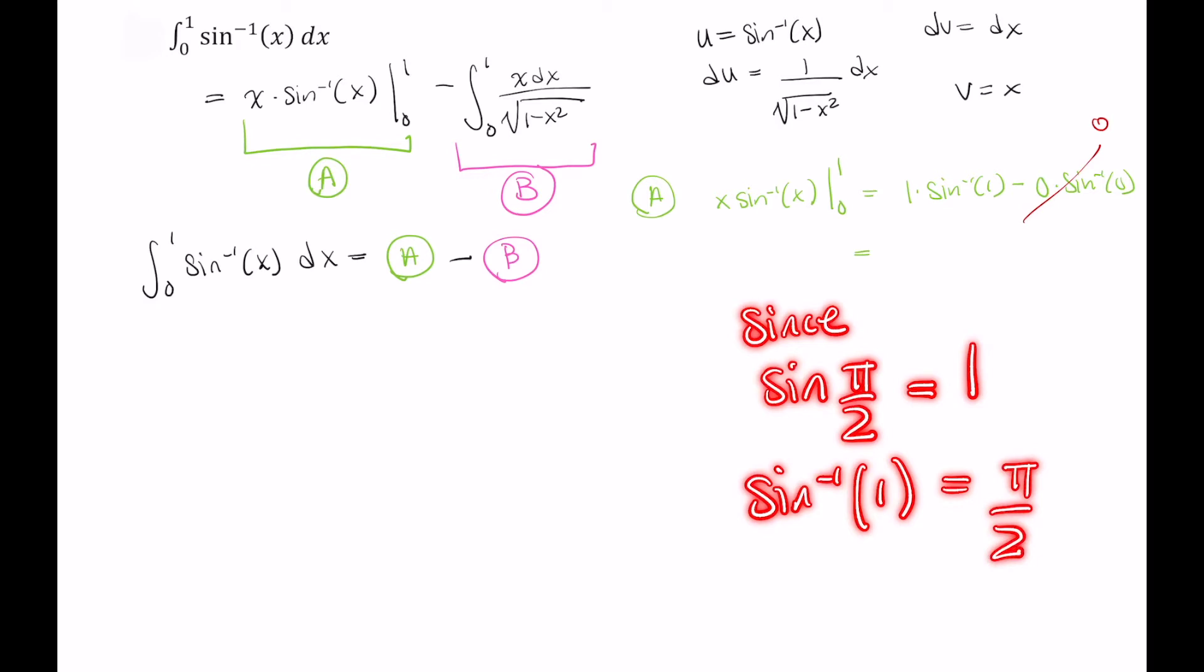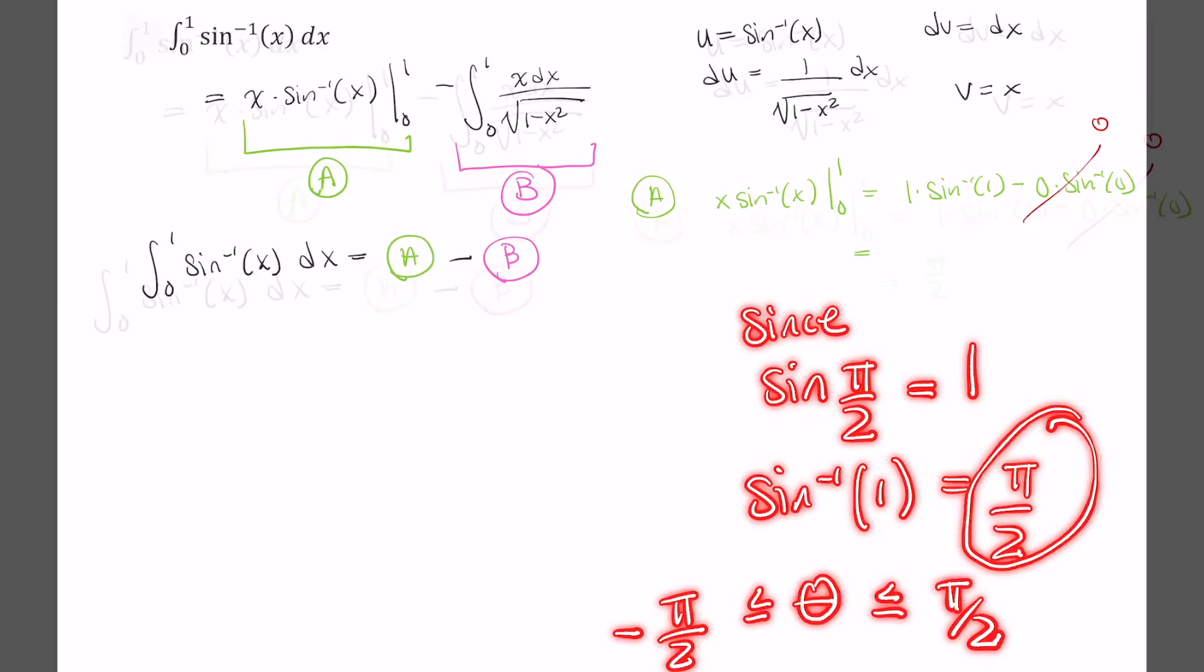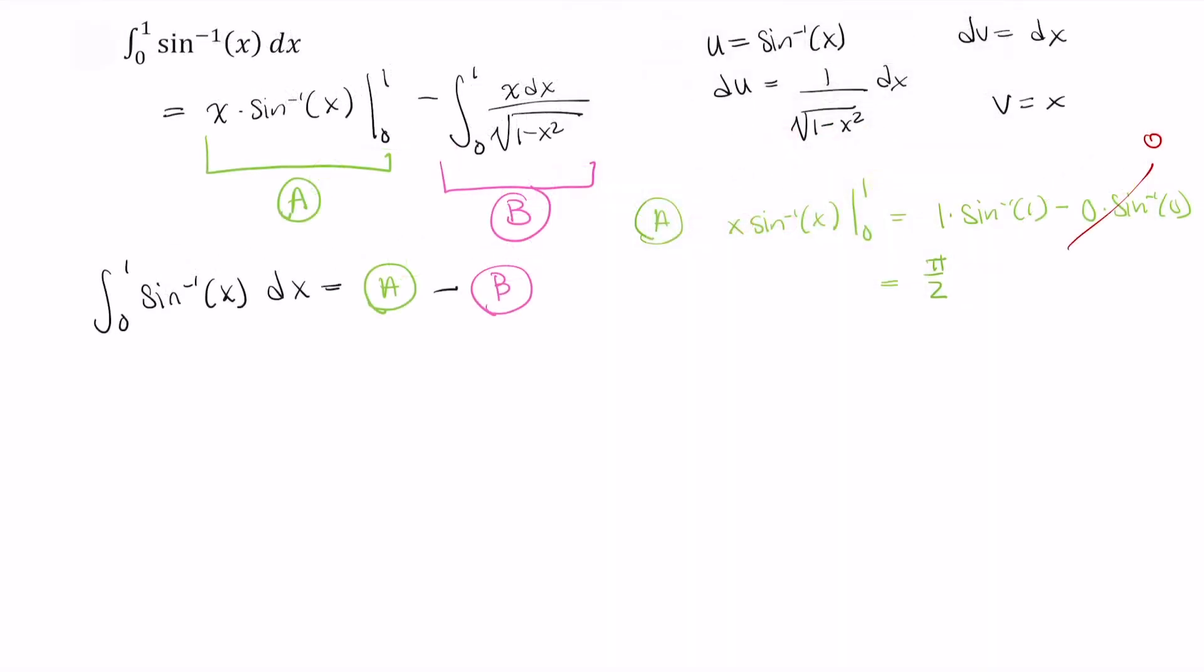And again, when we're dealing with sine inverse, you must restrict the angle. So that's, in this case, the range. This value here, if this is your angle theta, is restricted to values between negative pi over 2 and pi over 2.